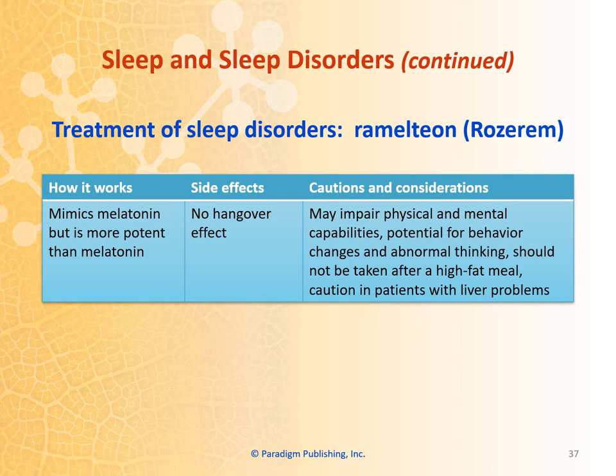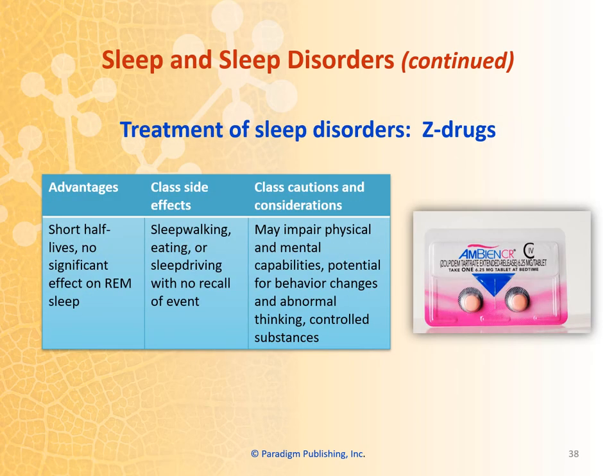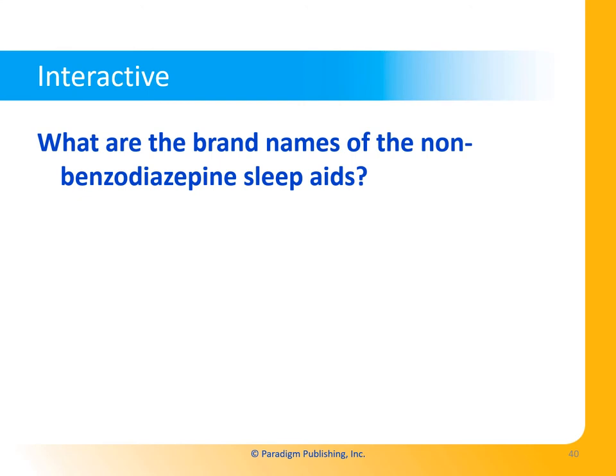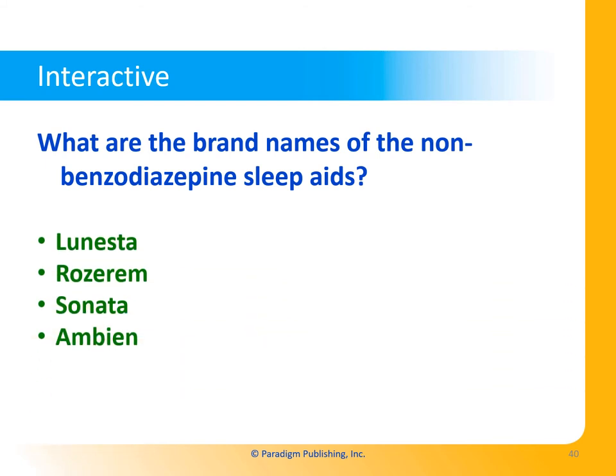Ramelteon mimics melatonin but is more potent than melatonin, and is also used to treat sleep disorders. Z-drugs are a class of drugs with a short half-life, which leads to no significant effect on REM sleep. Ambien CR is in this class. Other Z-drugs include Lunesta, Sonata, and Ambien. The brand names of non-benzodiazepine sleep aids include Lunesta, Ramelteon, Sonata, and Ambien.